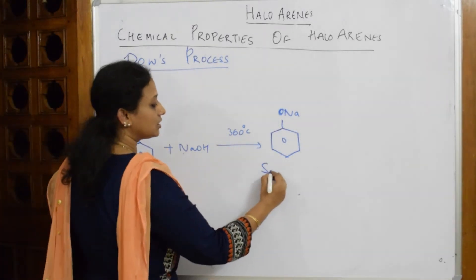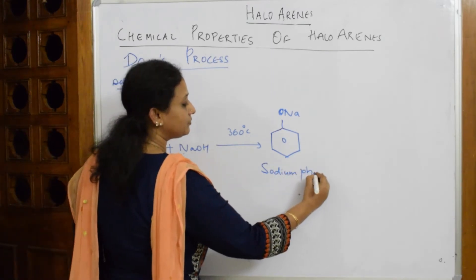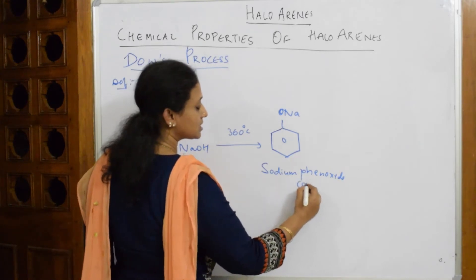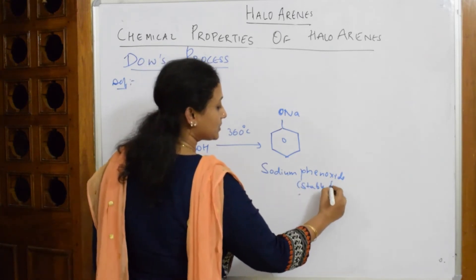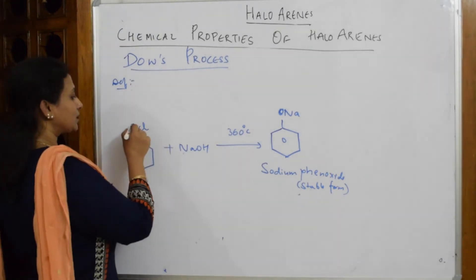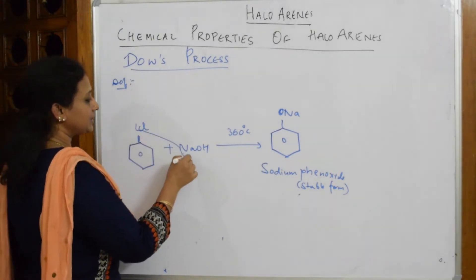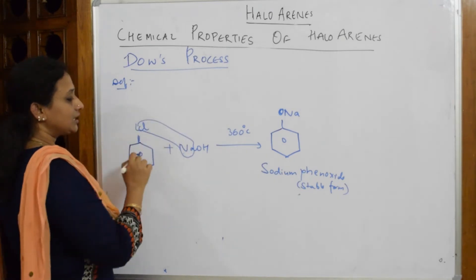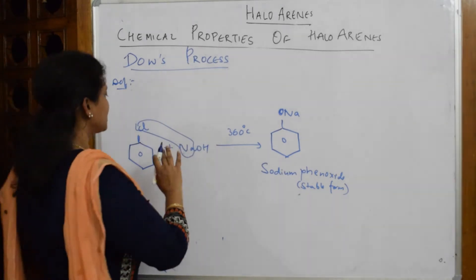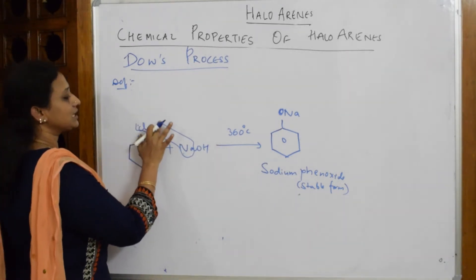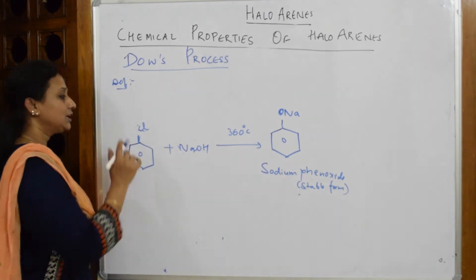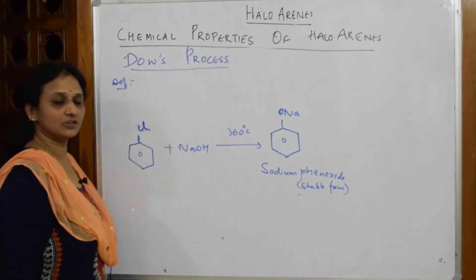But remember, this chlorobenzene, before forming the final product, in between, is going to get converted into a compound called sodium phenoxide. This is called sodium phenoxide — it is a stable form. Phenoxide is a stable form, and I will explain its resonance in a few minutes. Then this NaCl goes in the next step, and the Cl is done — sodium phenoxide is formed.